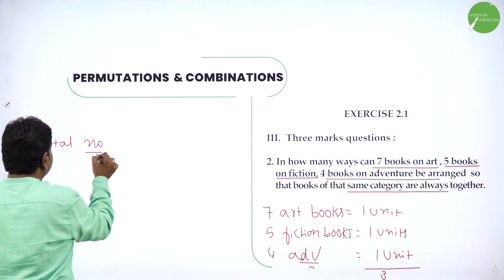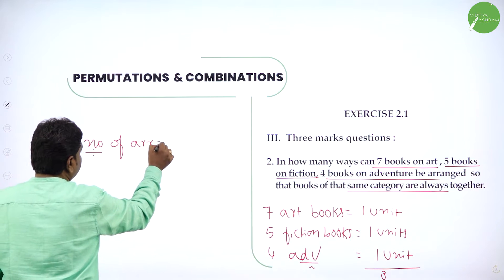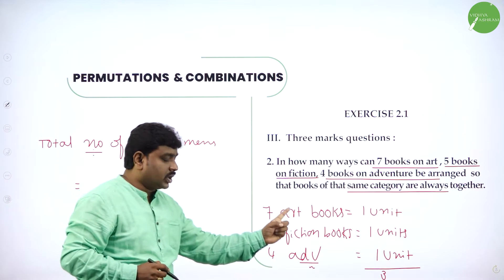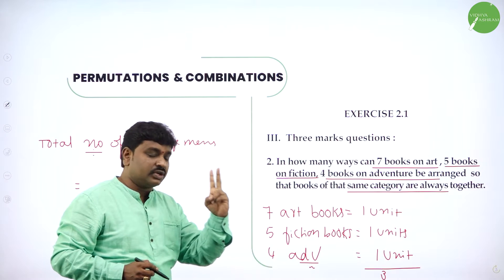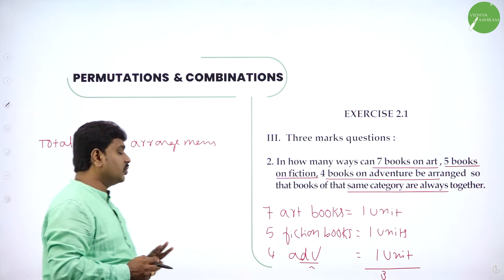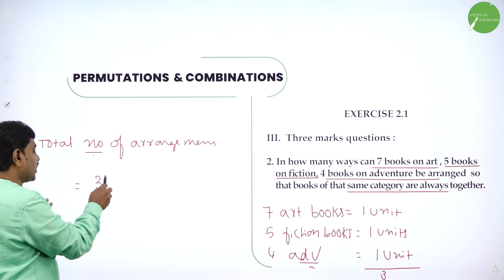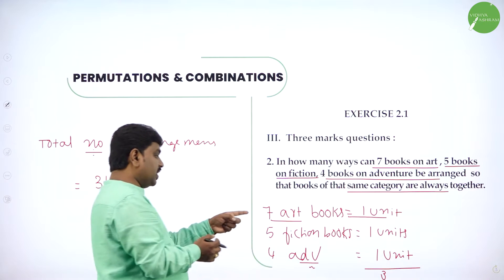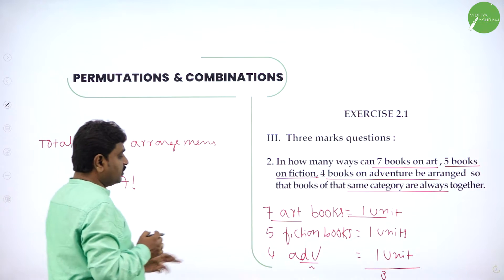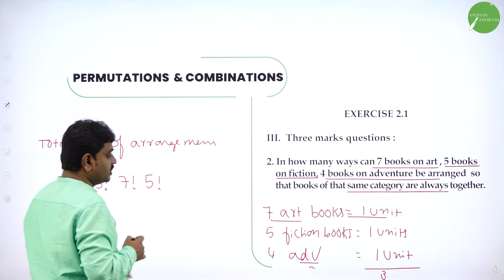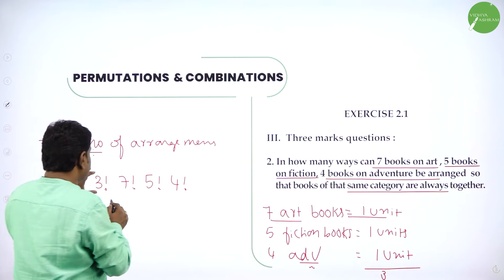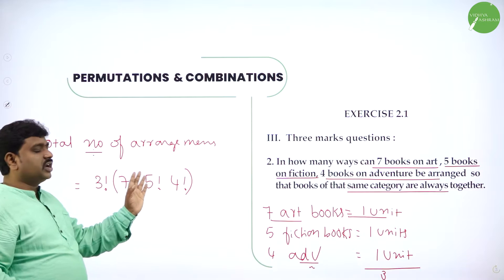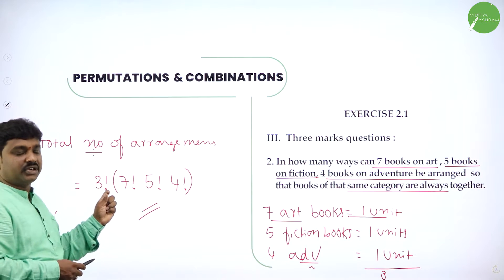Total number of arrangements: 7 art books as 1 unit, 5 fiction books as 1 unit, 4 adventurous books as 1 unit — total 3 units. 3 units can be arranged in 3 factorial ways. Within each unit, the 7 art books can be arranged in 7 factorial ways, 5 fiction books in 5 factorial ways, and 4 adventurous books in 4 factorial ways. So the answer is 3 factorial into 7 factorial into 5 factorial into 4 factorial.